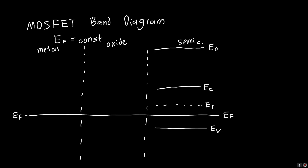For the oxide, we've got our vacuum level E0. We've got the conduction band, which is much closer to the vacuum level than with the silicon. The reason for that is the electron affinity. Chi is the symbol we use for that, so this is chi of the oxide, or the electron affinity of the oxide.